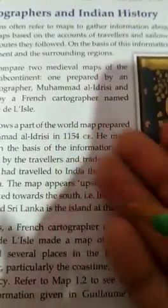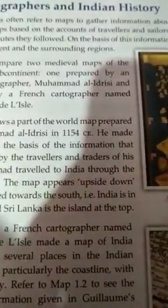First, we talk about cartographers and Indian history. Historians often refer to maps to gather information about history. Cartographers in olden times made maps based on the accounts of travelers and sailors. Travelers wrote accounts of their journeys and the routes they followed, and on the basis of this information, cartographers prepared maps of the Indian sub-continent and surrounding regions.